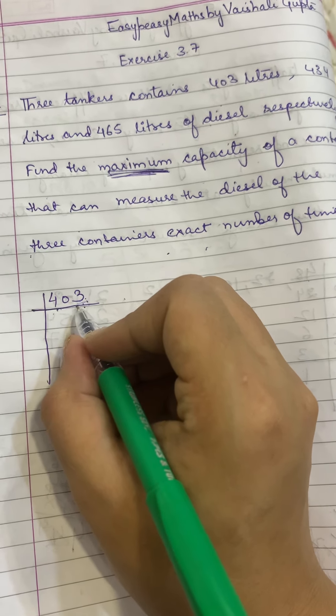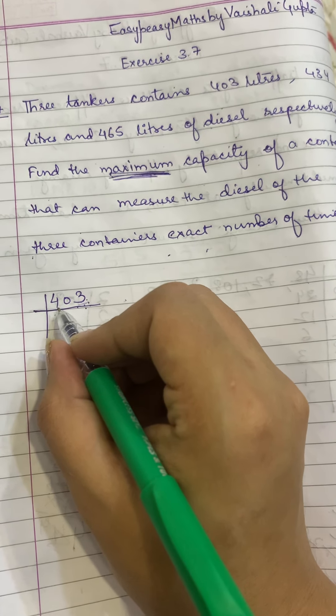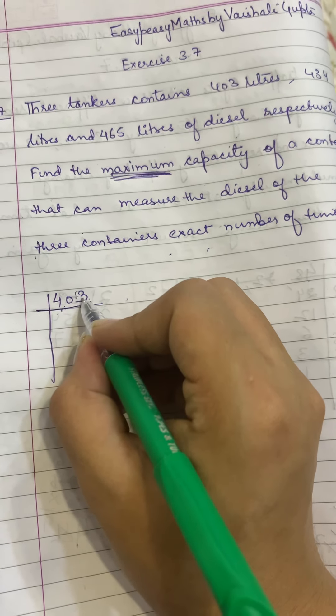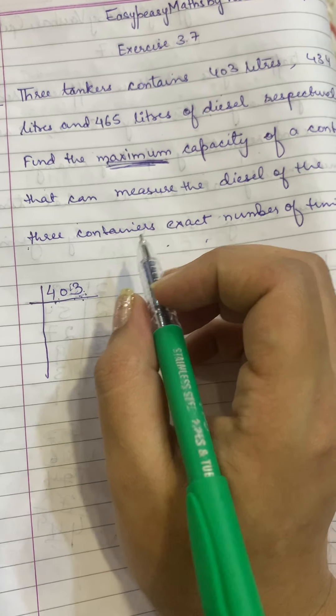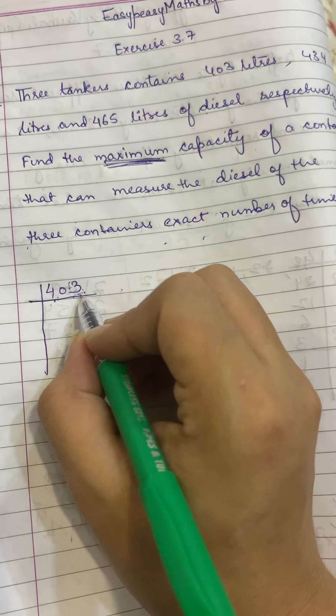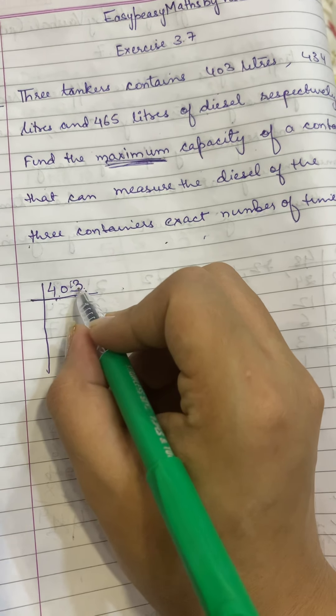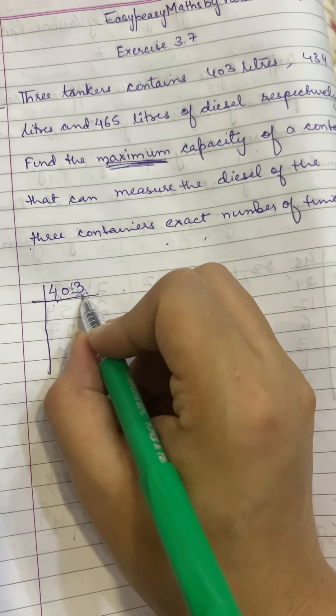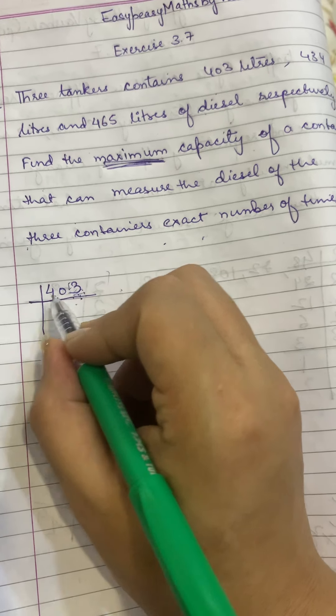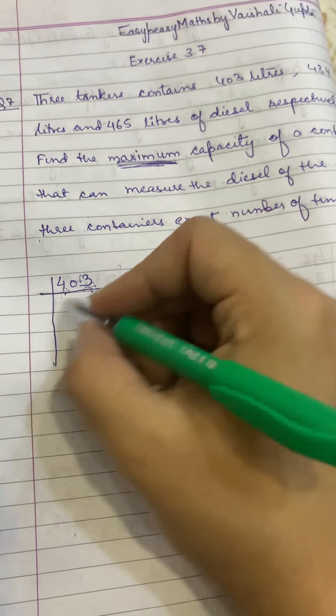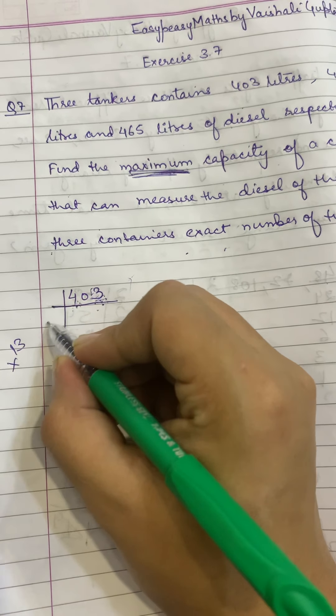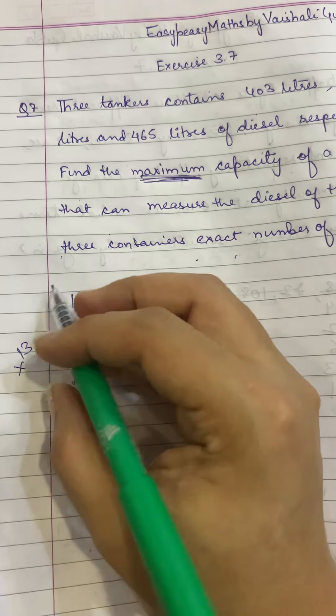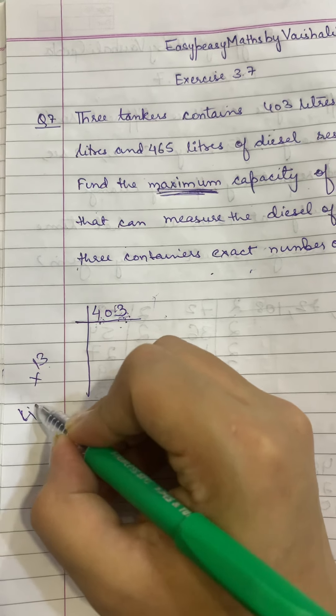Then we know that 7 is not going. Let's check this out. If we check this out from 13, we will divide 403 by 13.